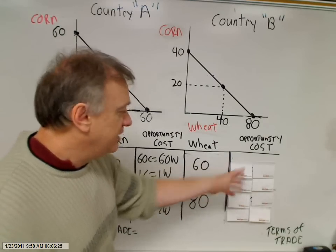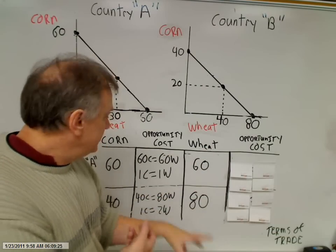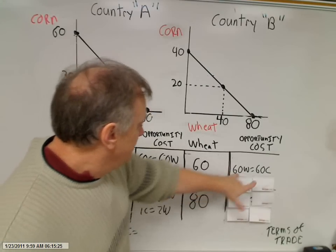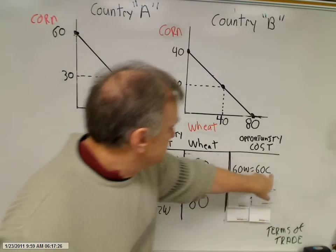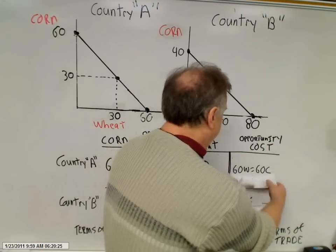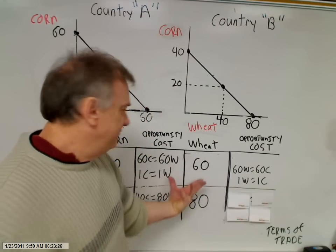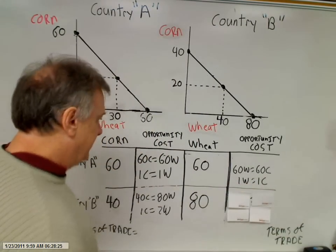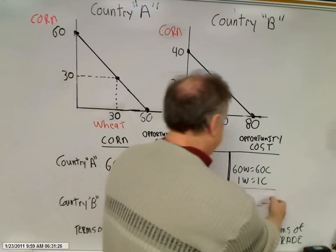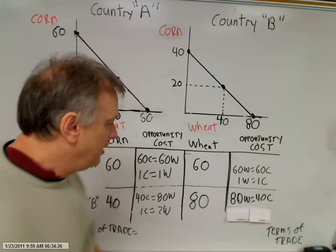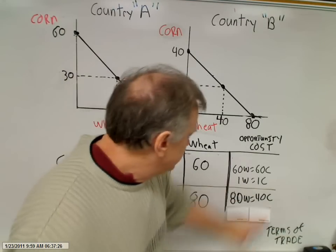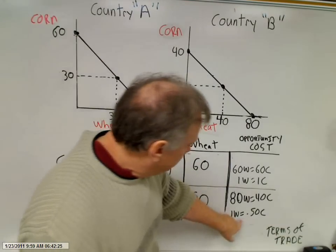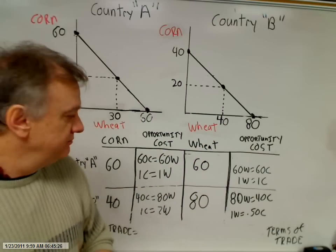Now let's look at wheat in terms of corn — just the reciprocal. For country A: 60 wheat to 60 corn simplifies to one wheat costing one corn. For country B: 80 wheat to 40 corn simplifies so that one bushel of wheat costs them half a corn.